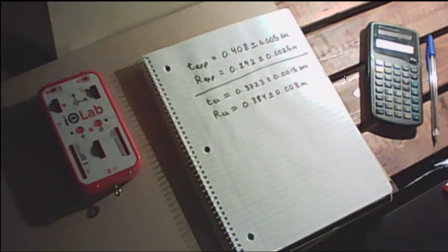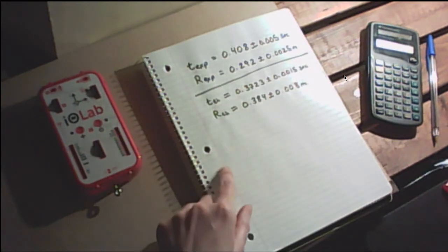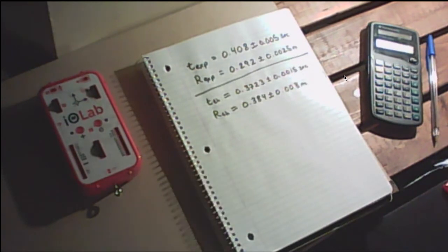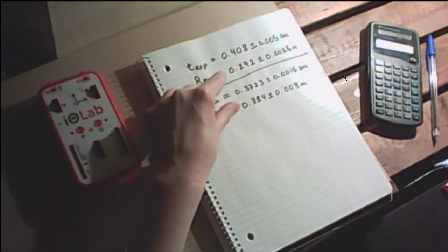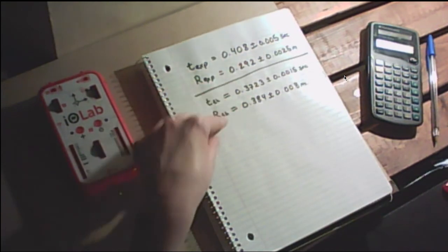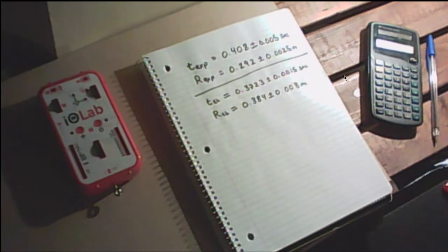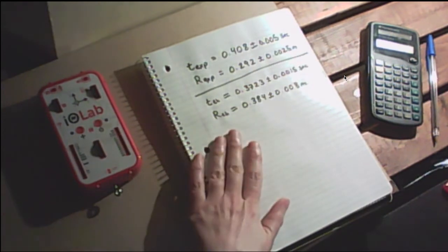Let's think about the assumptions and approximations we used in this experiment. The first one is we're sending a cart through the air — we assumed that there was no air resistance. So might that have caused this big a discrepancy? Well, nine centimeters — probably not. Air resistance might change your value by a couple of millimeters; it wouldn't change it by a couple of centimeters. So that's one assumption that probably did not cause this.